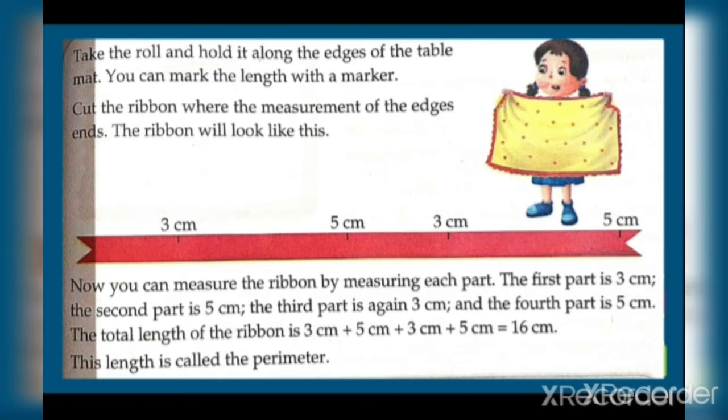You can measure the ribbon by measuring each part. The first part is 3 cm, the second part is 5 cm, the third part is again 3 cm, and the fourth part is 5 cm. The total length of the ribbon is the sum of all these parts.